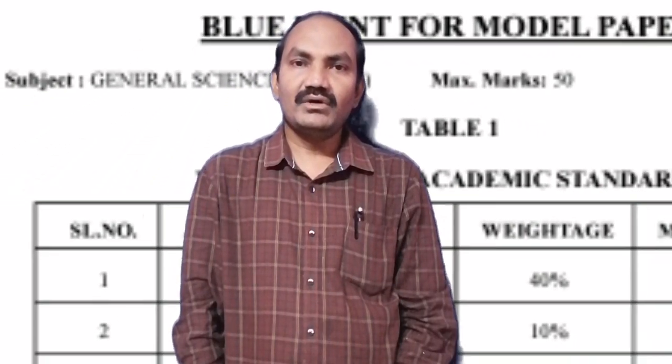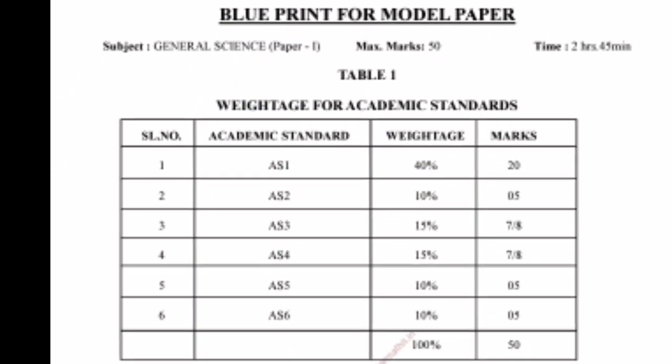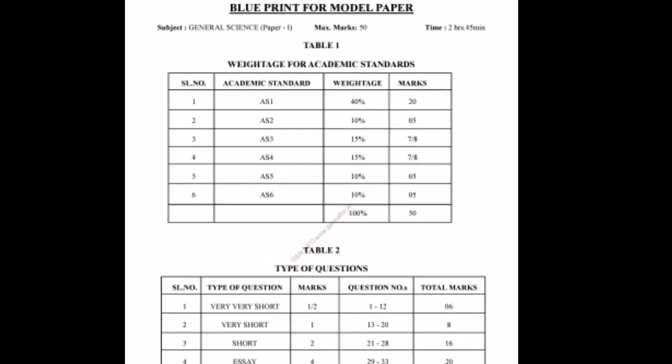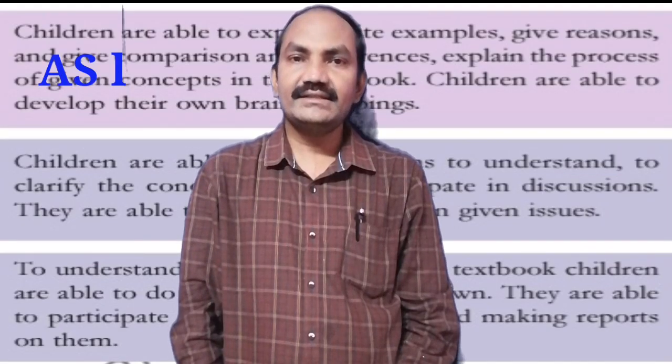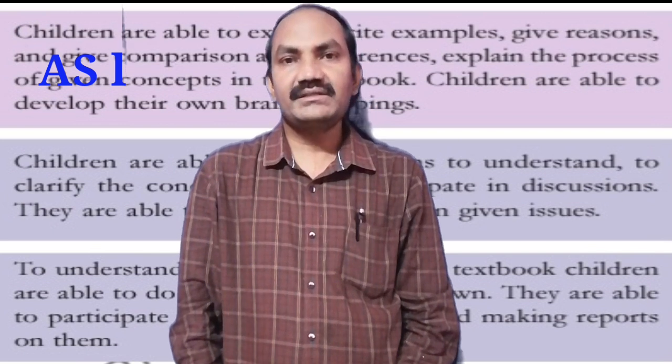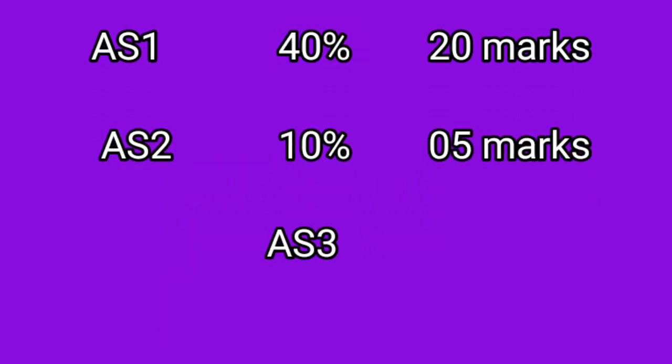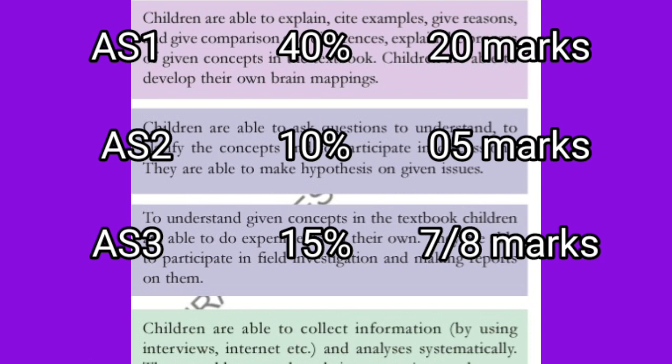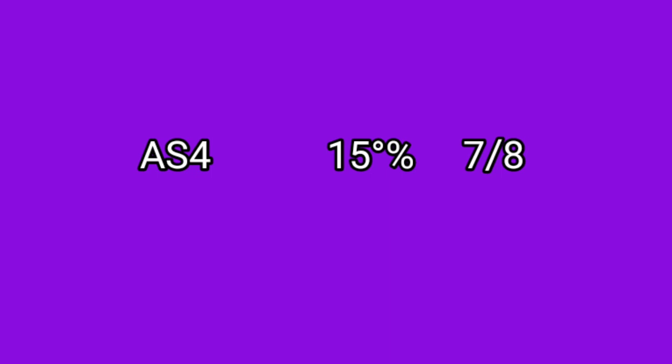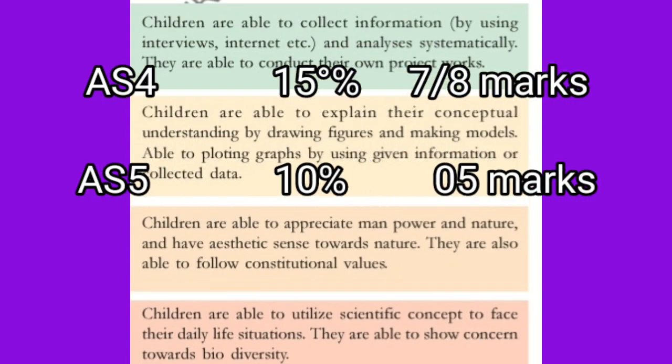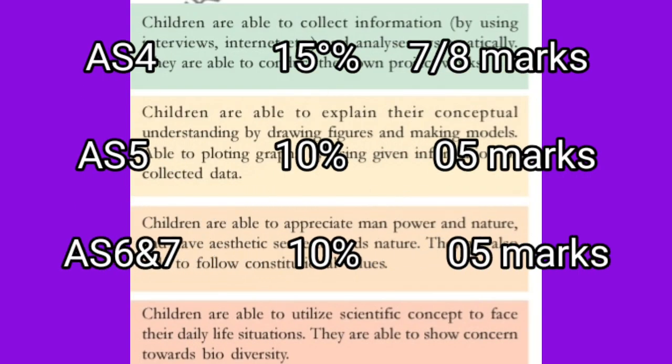Coming to the blueprint of our model paper. AS 1 is having 40% of marks, that is 20 marks, for conceptual understanding. AS 2 is having 10% weightage, that is 5 marks. AS 3 and AS 4 having 15% weightage, that is 7 or 8 marks. AS 5 and AS 6 having 10% weightage, that is 5 marks.